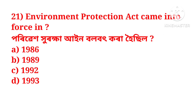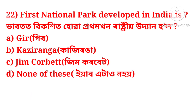The Environment Protection Act came into force in a particular year. The next question is: which is the first national park developed in India? The options are: Gir, Kaziranga, or Jim Corbett.